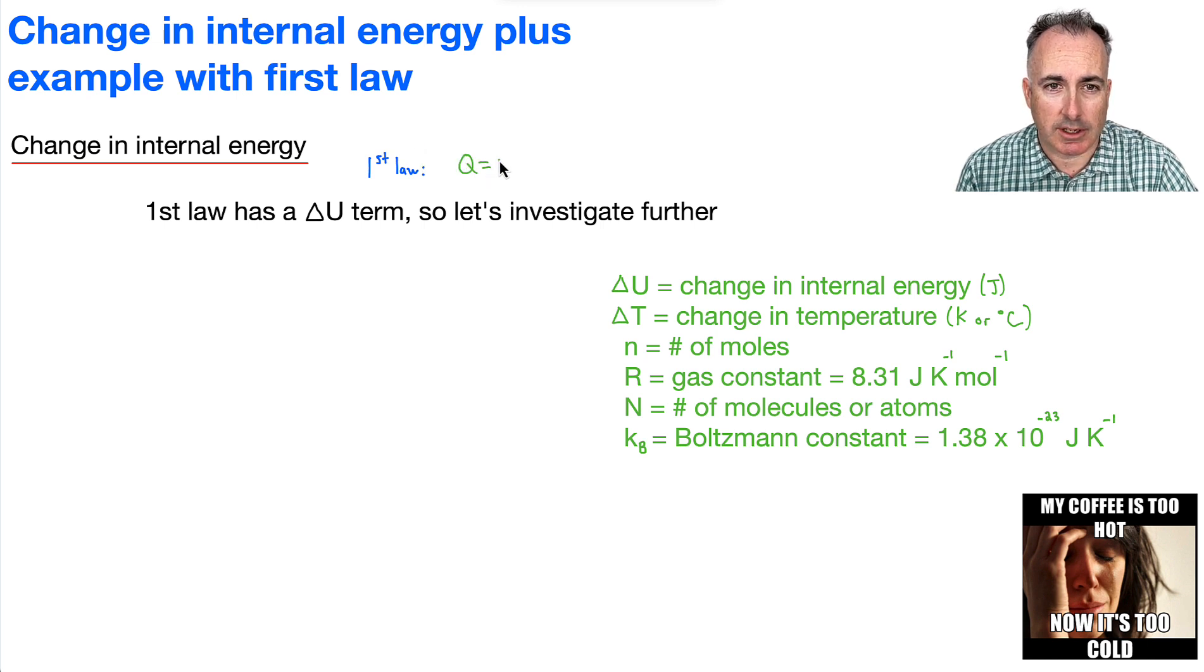Let's remind ourselves, what is the first law of thermodynamics again? It goes like this: Q equals delta U plus W. This is important because this first law has a delta U term. So that means we can actually go a little bit further and figure out what is that change in internal energy. We have an equation for it, actually.